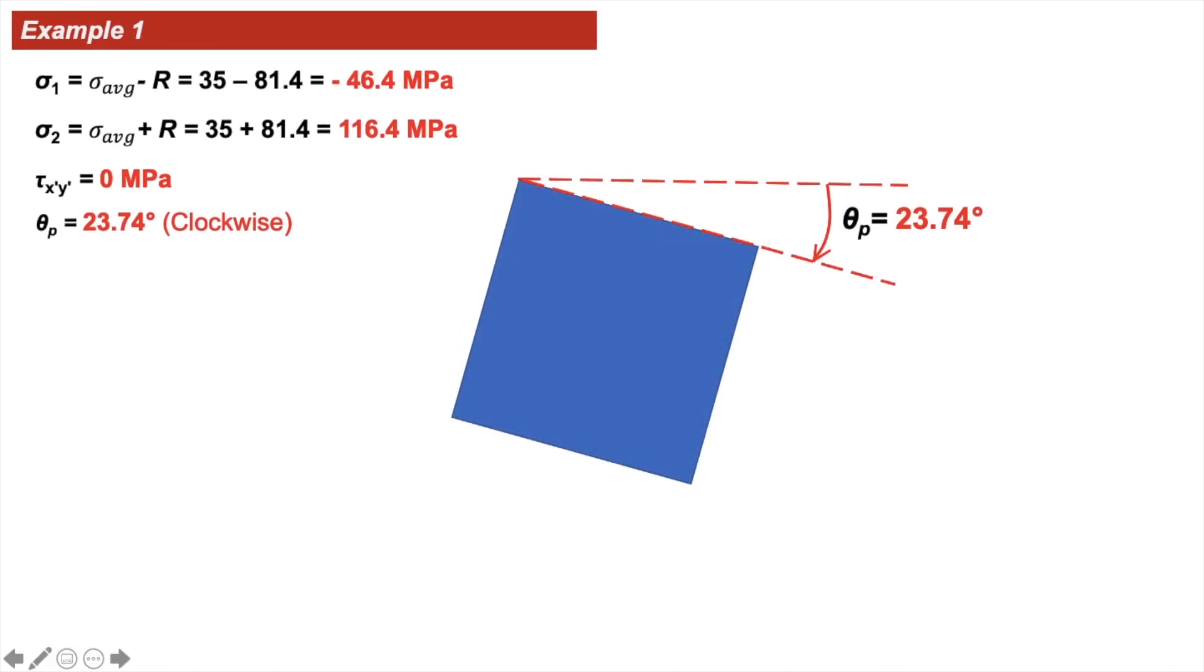Let's see how we can construct the newly transformed element. We have sigma 1 of minus 46.4 and sigma 2 of 116.4. This marks the end of example 1. Thank you for watching and please subscribe to Bold Learning.